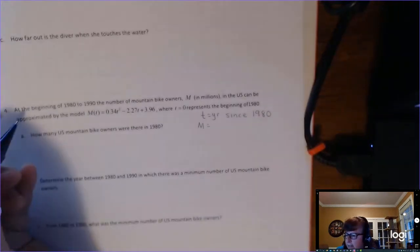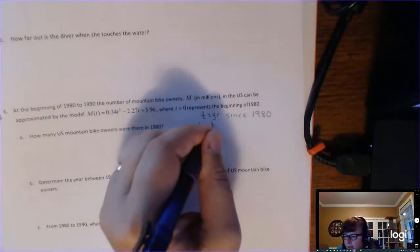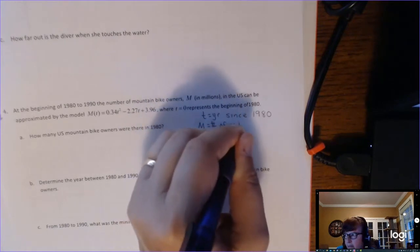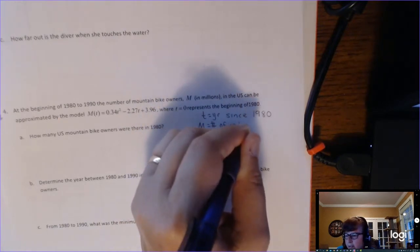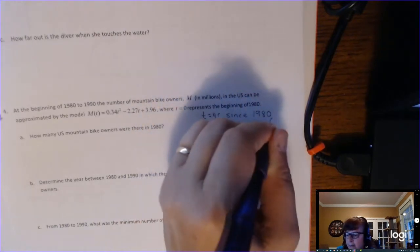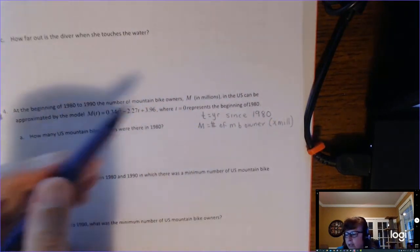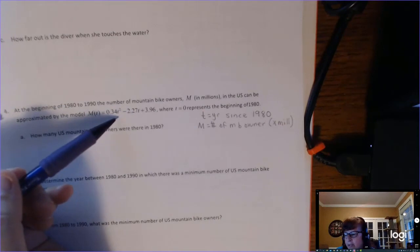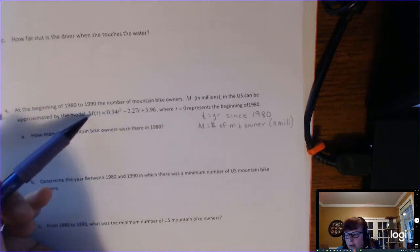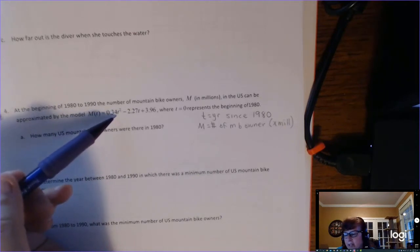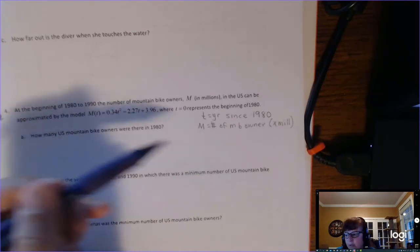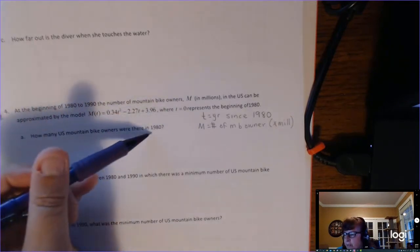time T is years since 1980, and M is our output, that's the number of mountain bike owners, but it's in millions times a million. So you're not going to put the whole million into the function, into the output. It's just going to be a smaller number, and you're not going to put the year, the actual year, into the function.